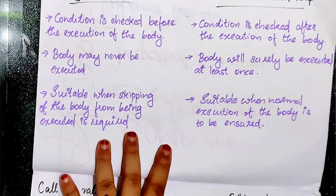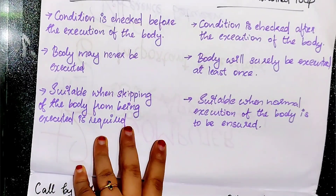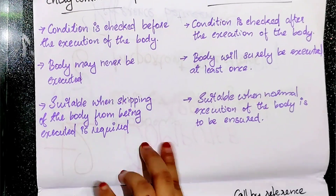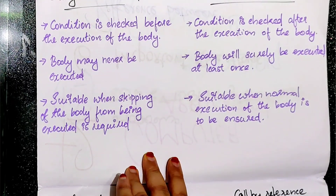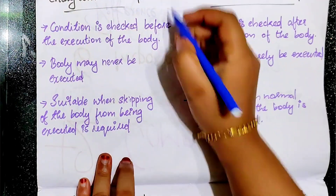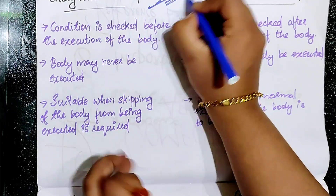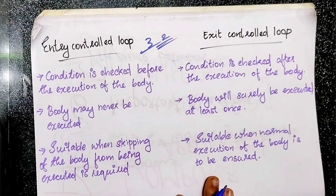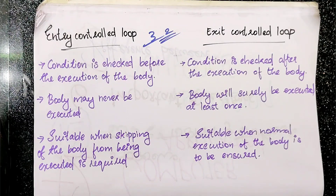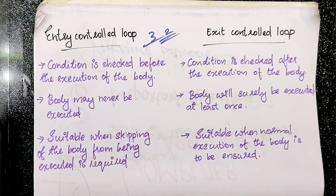The first question is the entry control loop and exit control loop. The second one is the entry control loop and exit control loop. The condition is checked BEFORE the execution of the body in the entry control loop. This condition is checked before the execution of the body.